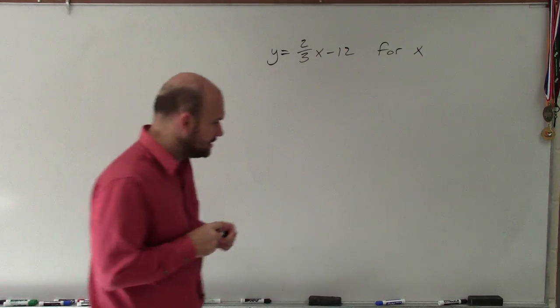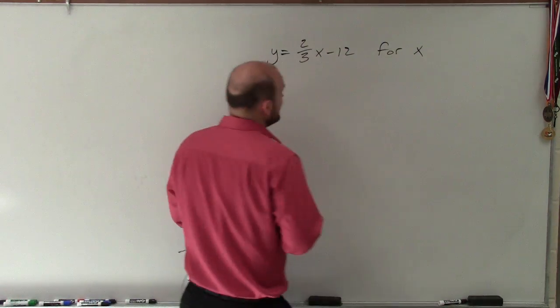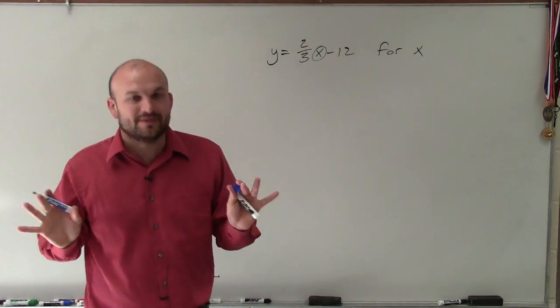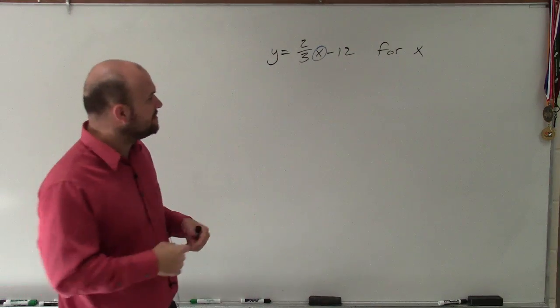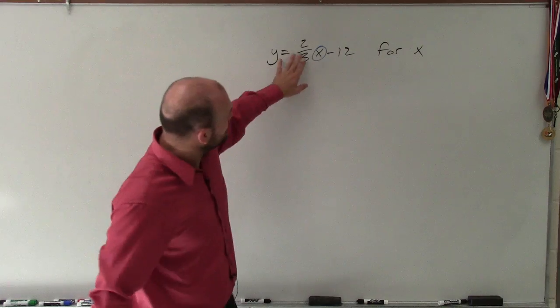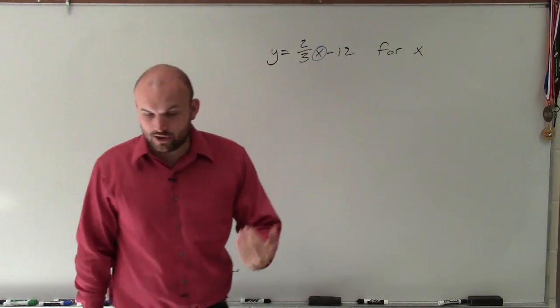A lot of times when I'm solving a literal equation, what I will do is what we call pinning the variable, or I'm just going to circle the variable and keep it there. And what I'm going to do is now just look at what is happening to the variable and undo everything that is happening. So you can see here I'm being multiplied by 2/3rds and I'm subtracting 12.